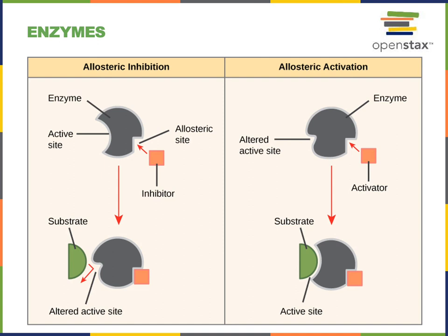A non-competitive inhibitor can also be considered an allosteric inhibitor, because it binds to a site different from the active site — known as the allosteric site. In the illustration, you can see a non-competitive inhibitor binding to the allosteric site could change the structure of the enzyme, preventing a substrate from binding to the active site. Some enzymes require allosteric activation, where a molecule known as an activator binds to the allosteric site, changing the structure of the enzyme to enable substrate binding to the active site.